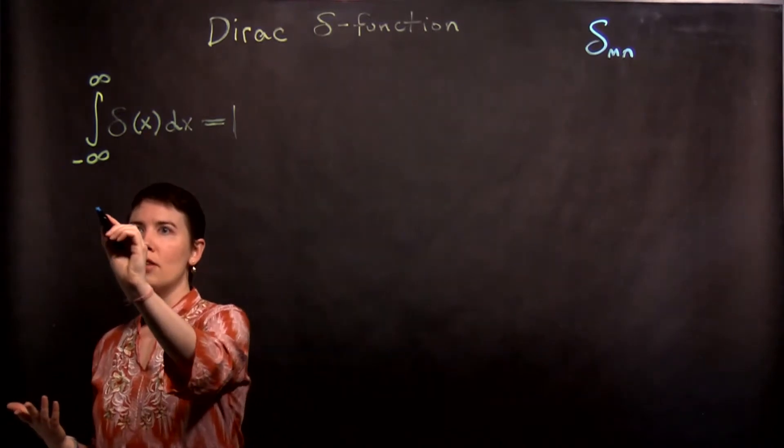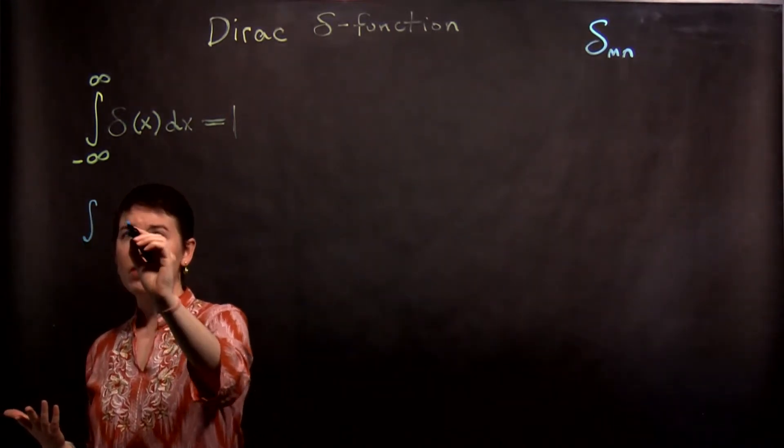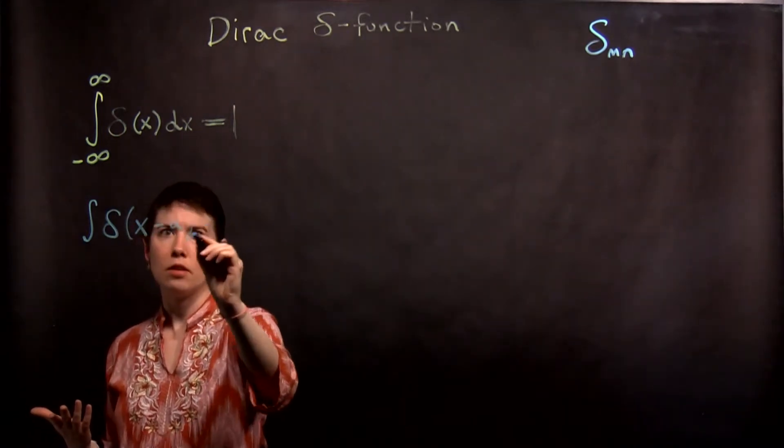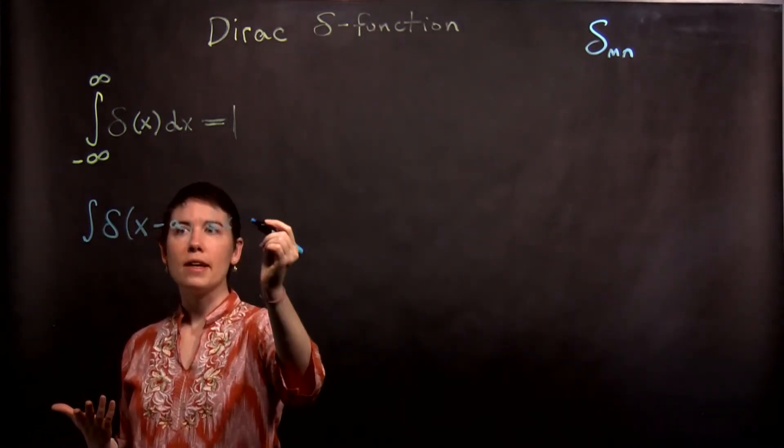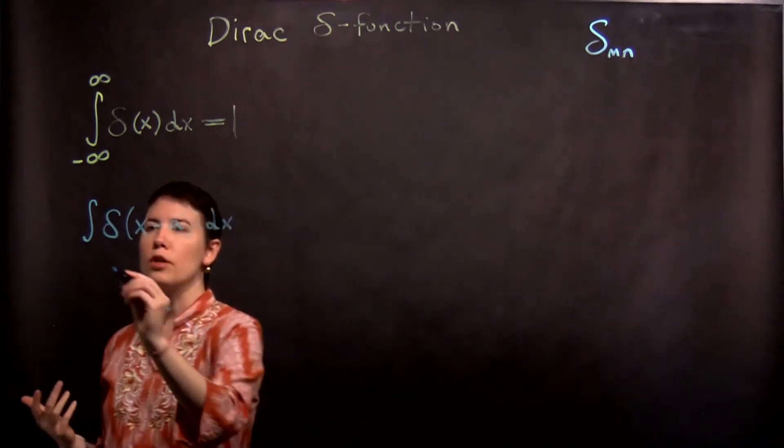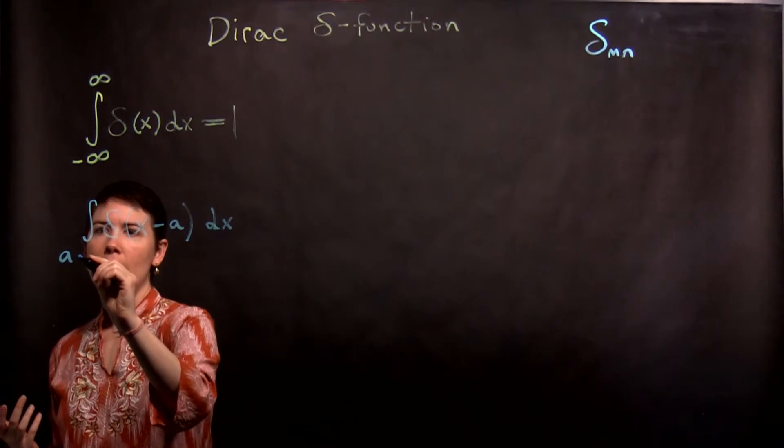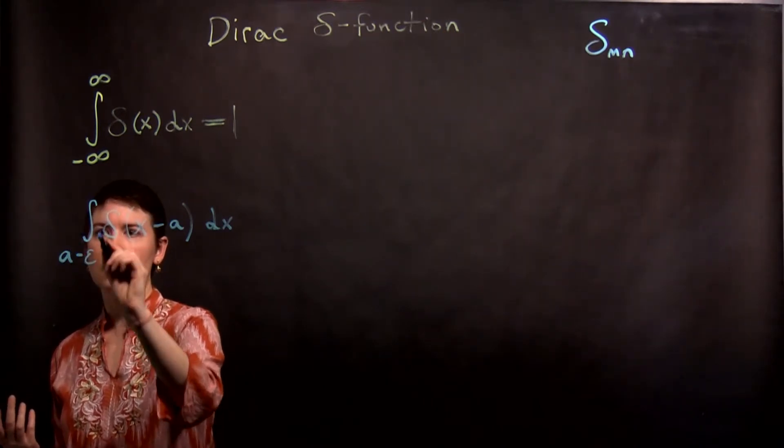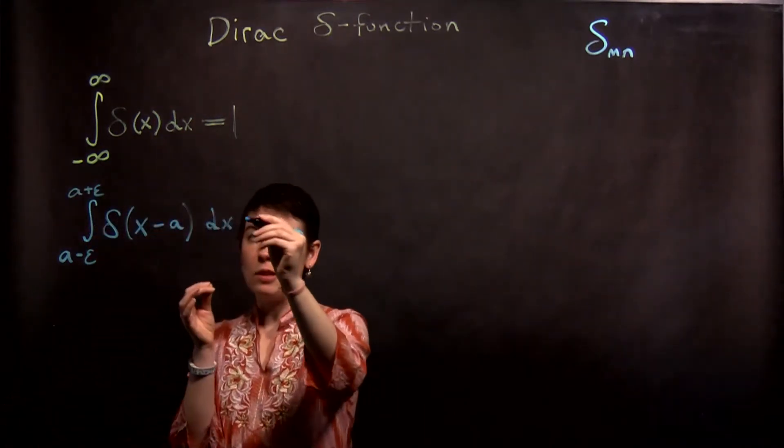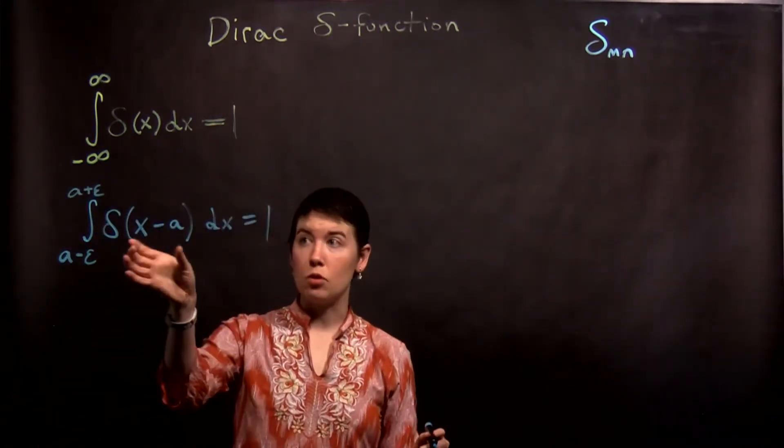So one of the ways that you might write this instead is x minus a. And now, this actually moves the spike to position a. And so we could write this as a minus epsilon to a plus epsilon, where epsilon is a little bit, this is still going to be equal to 1.